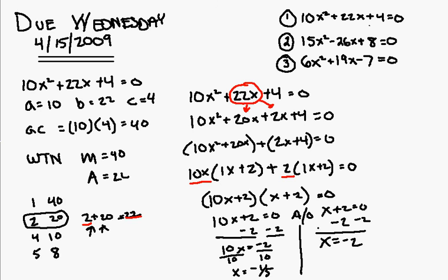These are the two answers. In other words, these are the answers that solve for the equation 10x squared plus 22x plus 4.